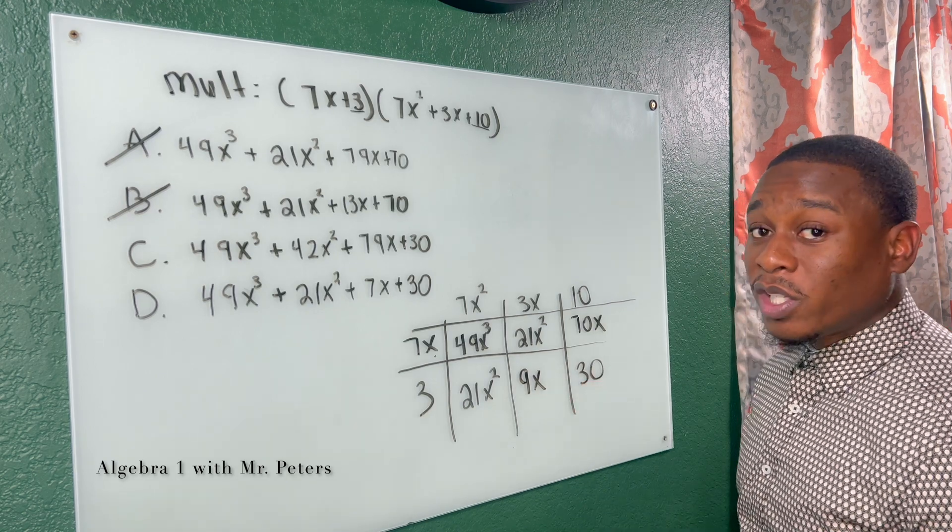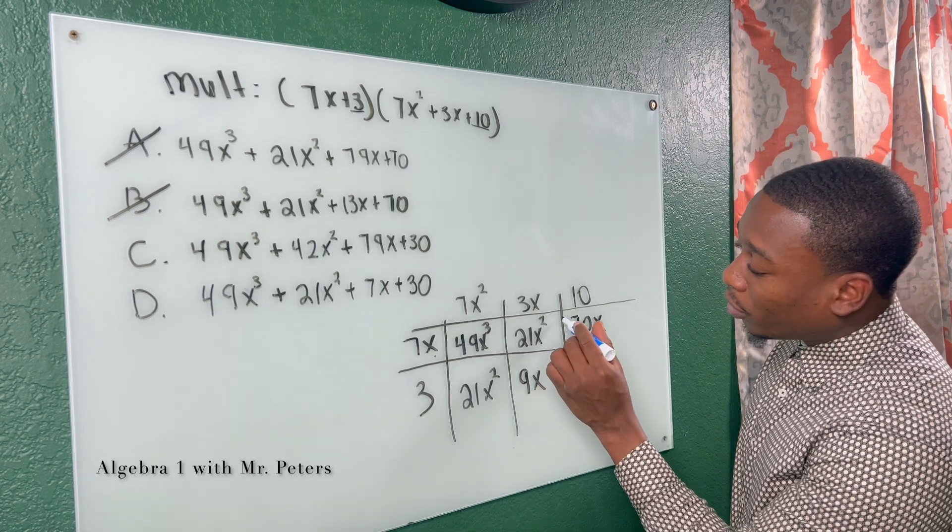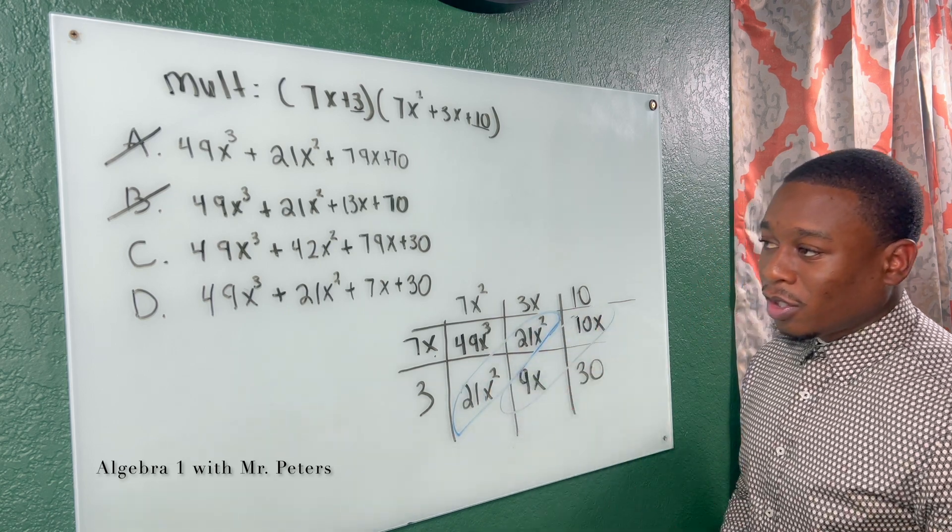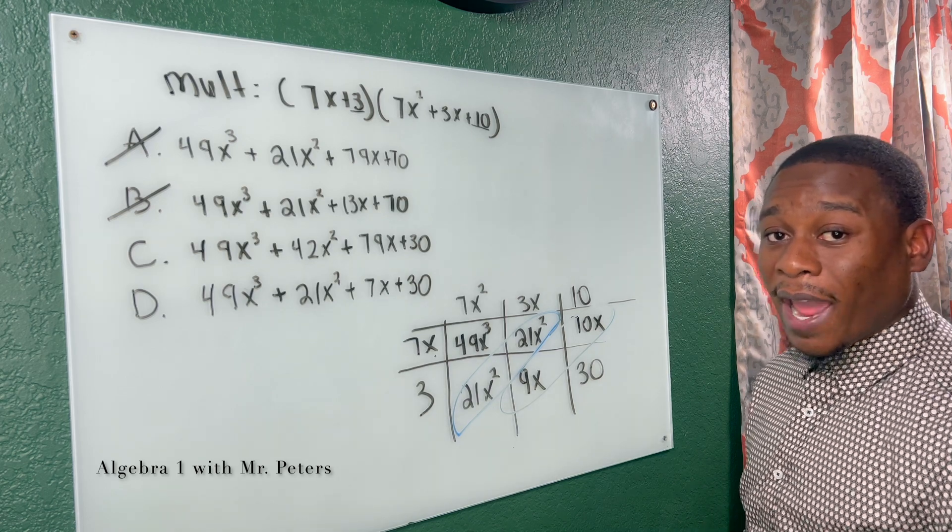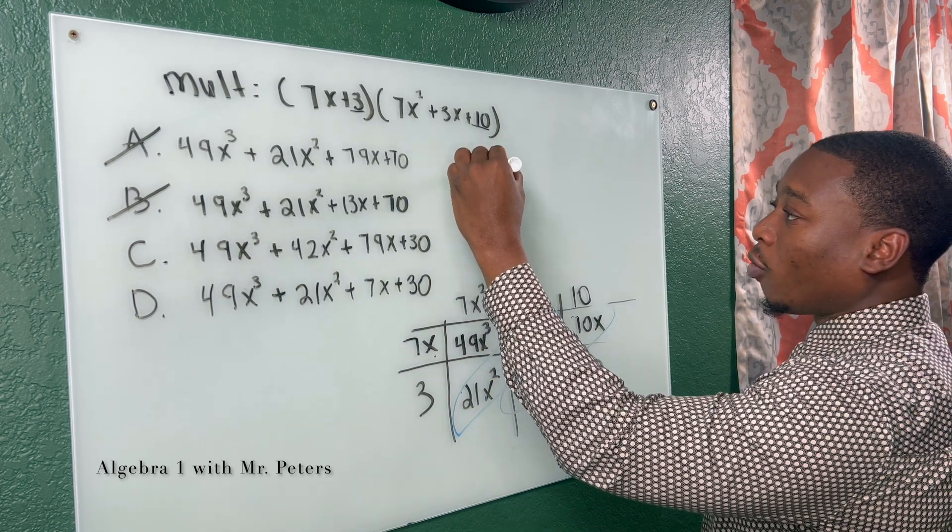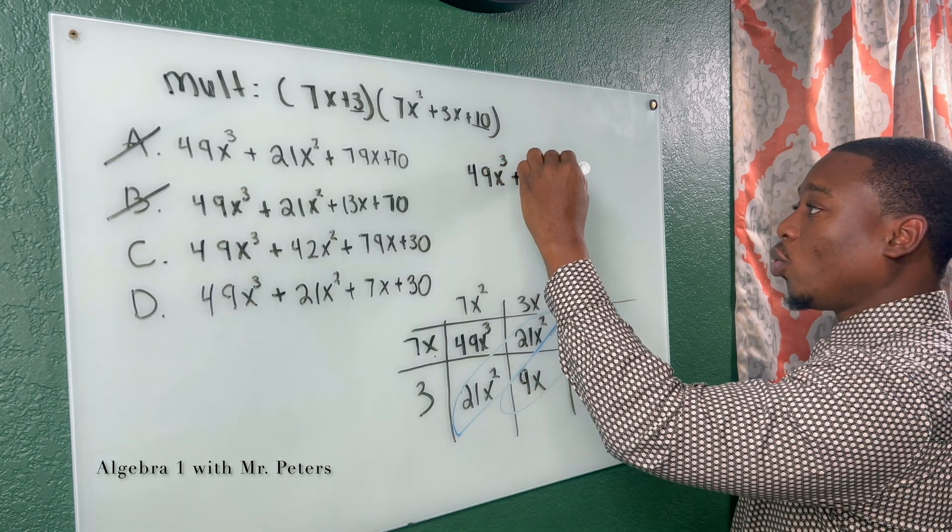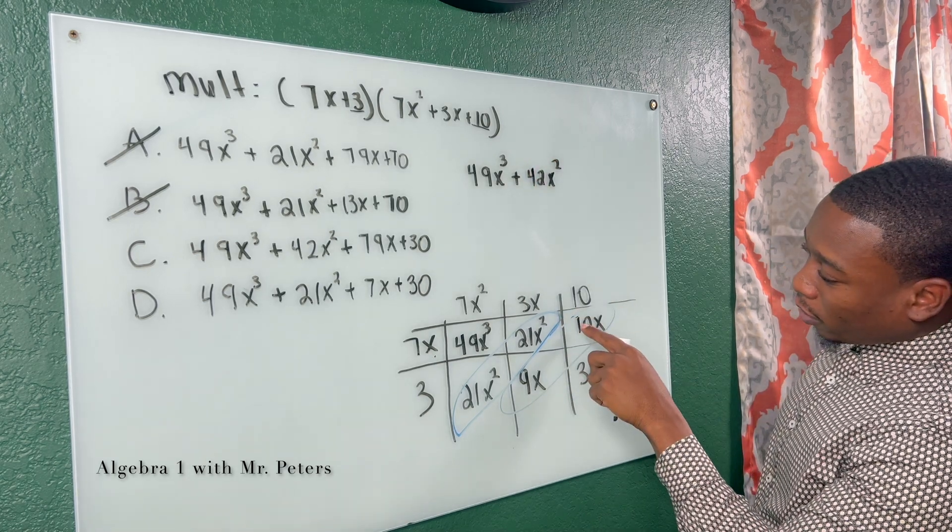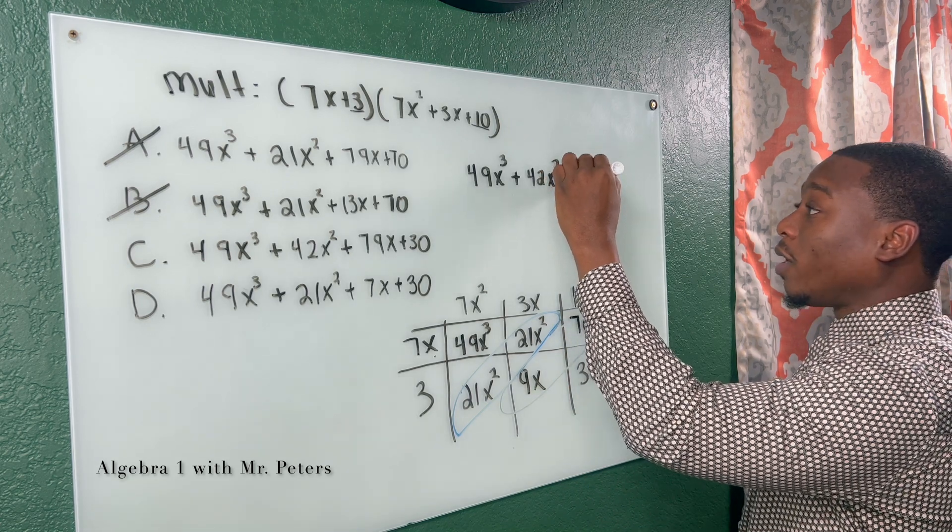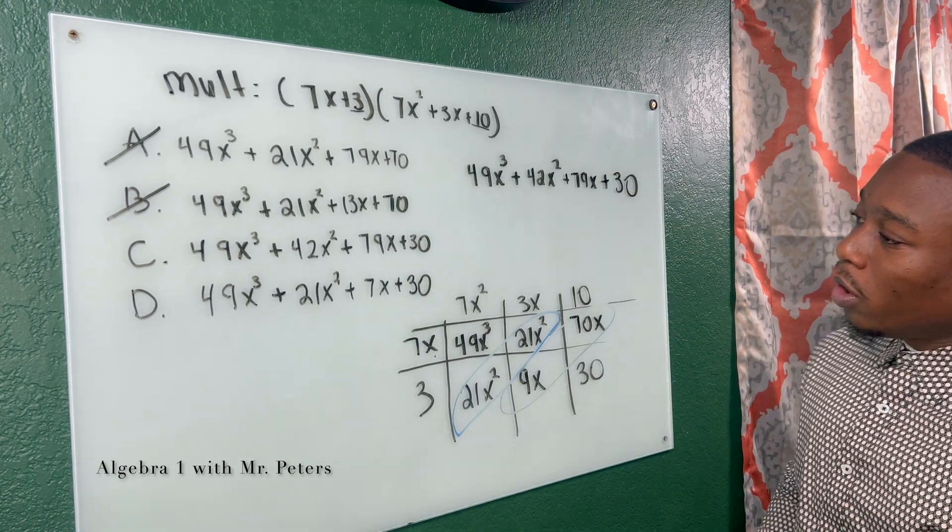Now, the reason why I love this method so much is after you're done multiplying, it's so nice and pretty for us. Our like terms normally run diagonal. So here goes two like terms, and here goes another two like terms. So now we don't even have to really worry about what we're adding or the first and last term. So when I rewrite this in standard form, we have 49x³ plus 21x² plus 21x²—that's 42x². That's gone. Let's see. This is 70 plus 9, which is going to give us 79x. And then that constant, nothing to add with it. So it just stays the same.